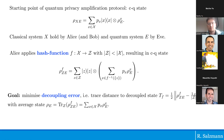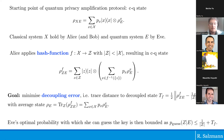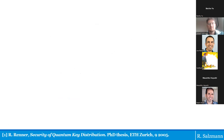The decoupling error in trace distance is the distance to the perfectly decoupled state — uniform distribution over the classical alphabet with key-independent side information for Eve. This is useful because the optimal probability with which Eve can guess the key is upper bounded by uniform random guessing plus the decoupling error. If the alphabet is large and the decoupling error is small, Eve has very small guessing probability and the key is fairly secure.